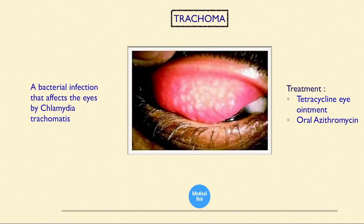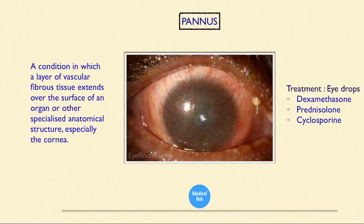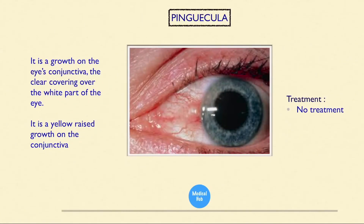This is chemosis — swelling of the conjunctiva due to oozing of exudate from abnormally permeable capillaries. No treatment. This is trachoma — a bacterial infection of the eyes by Chlamydia trachomatis; treatment is tetracycline eye ointment and oral azithromycin. This is pannus — a condition where a layer of vascular fibrous tissue extends over the surface of the cornea. Eye drops used: dexamethasone, prednisolone, and cyclosporine.